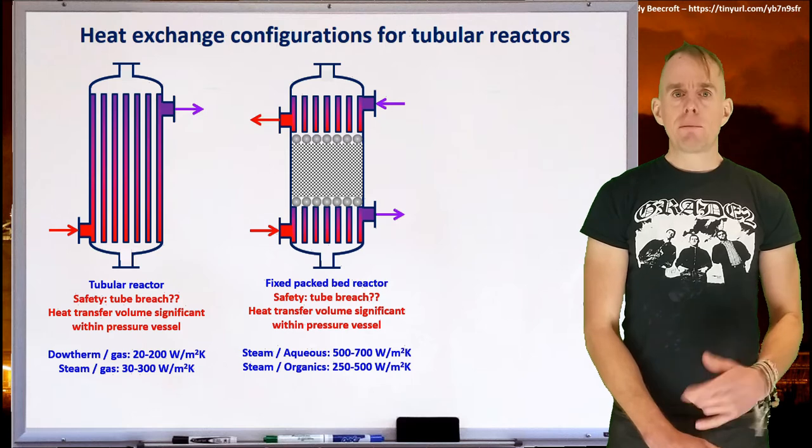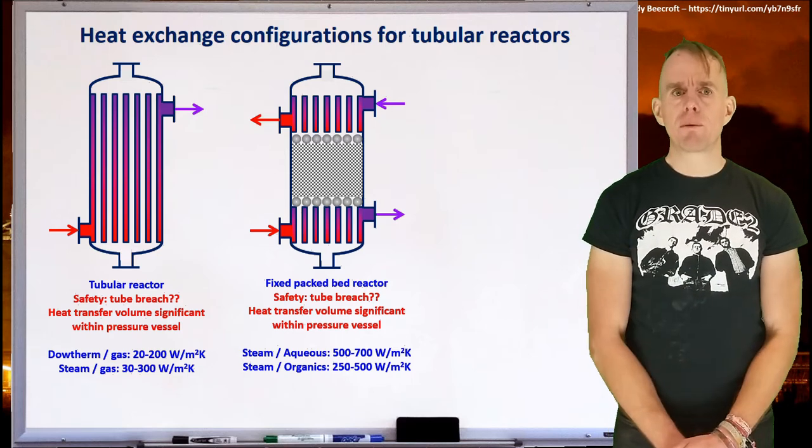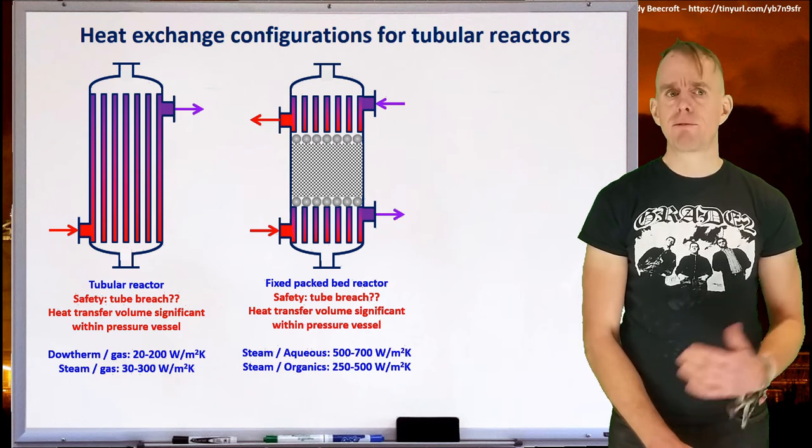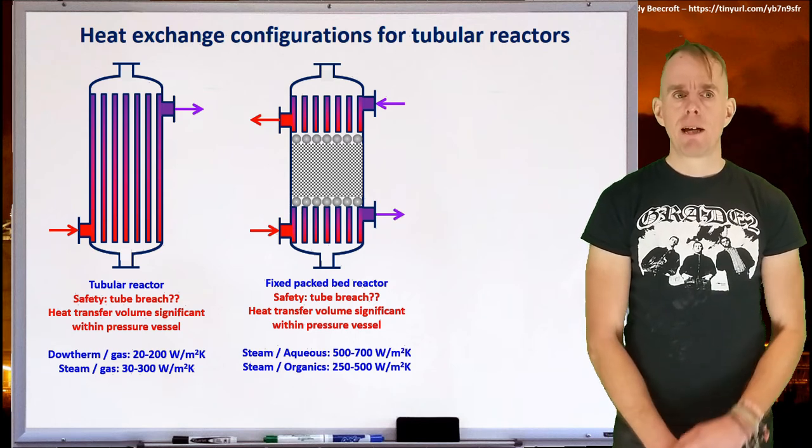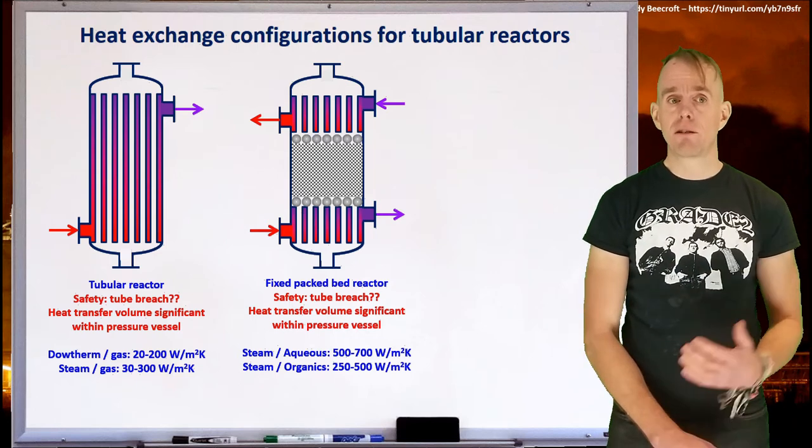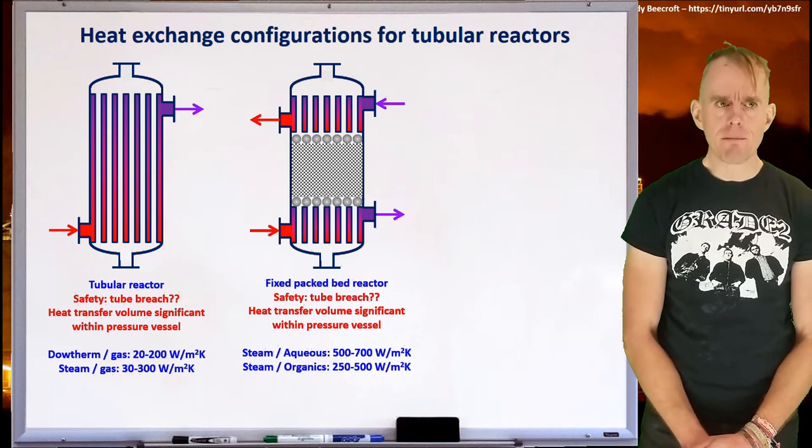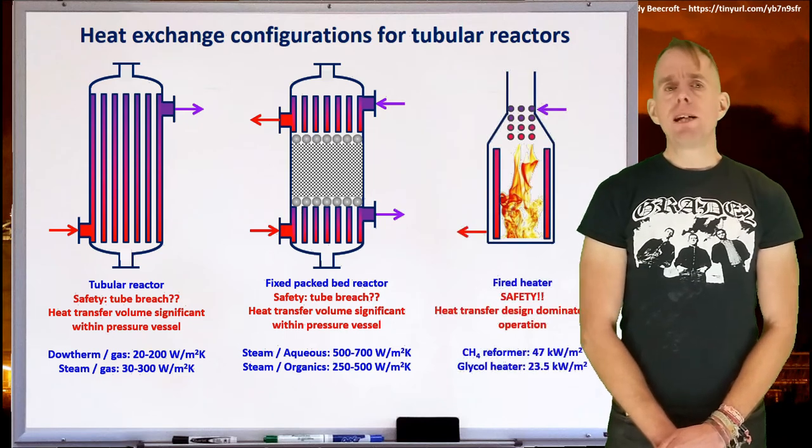So if we think about heat transfer coefficients, if you're using steam with an aqueous mixture, you might get 500 to 700 watt per square meter Kelvin. If you're using steam, heating or cooling organics, you might get 250 to 500 watt per square meter Kelvin. Okay, if we need high temperatures, then we said we need to go down the route of a fired heater or furnace.